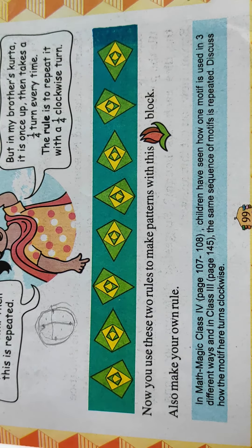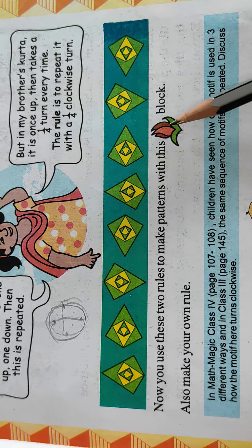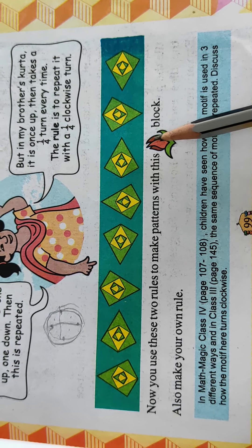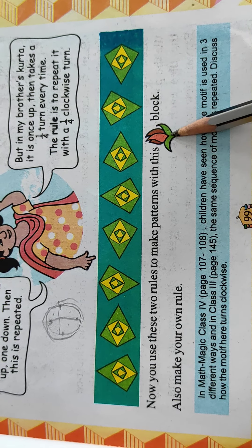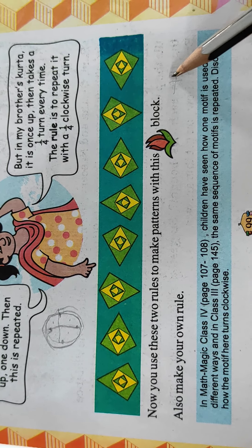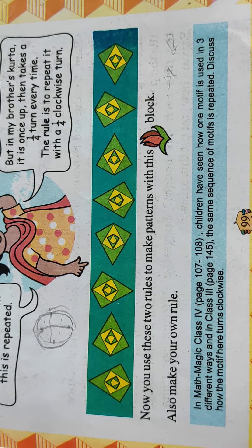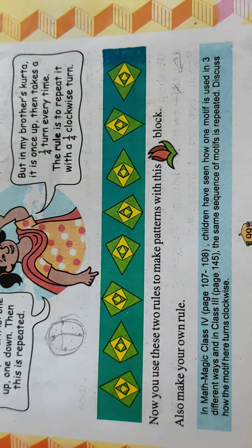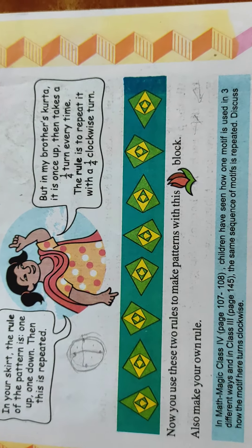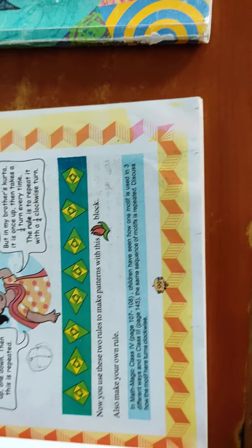Now you use these two rules to make patterns with this block. You can see this block. So one-upwards-downwards you can see. Or both blocks should be in the opposite direction also. You can take so many patterns from your own choice you can make. Now turn the page.